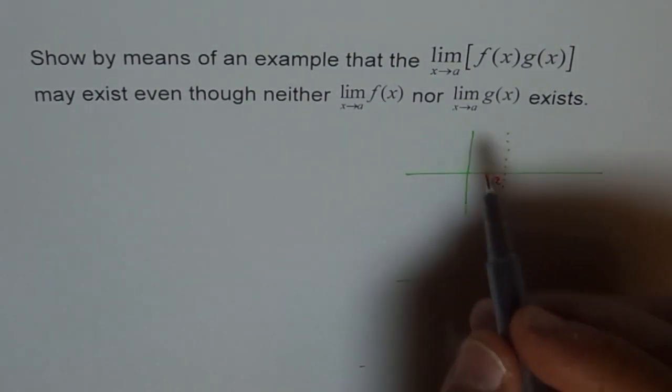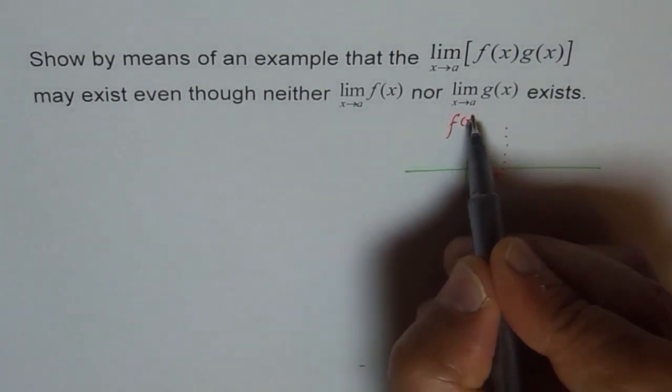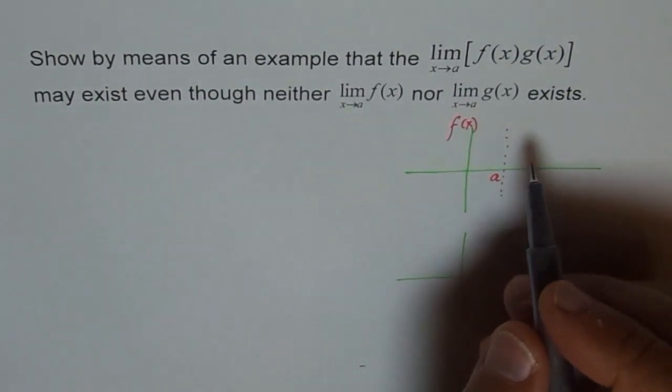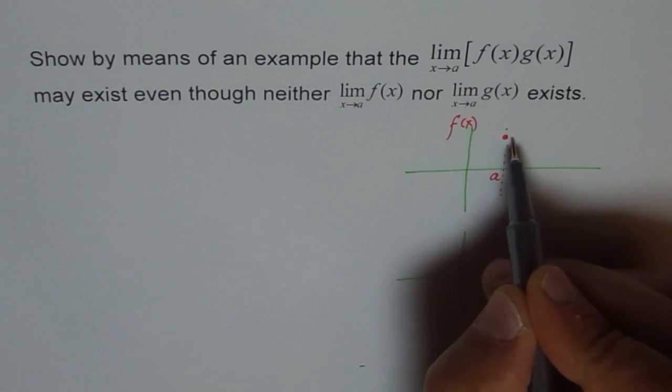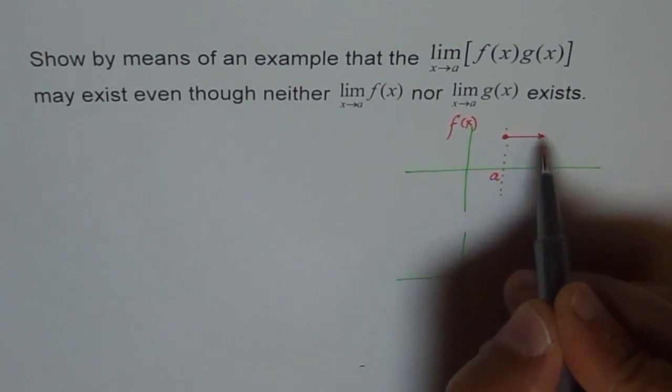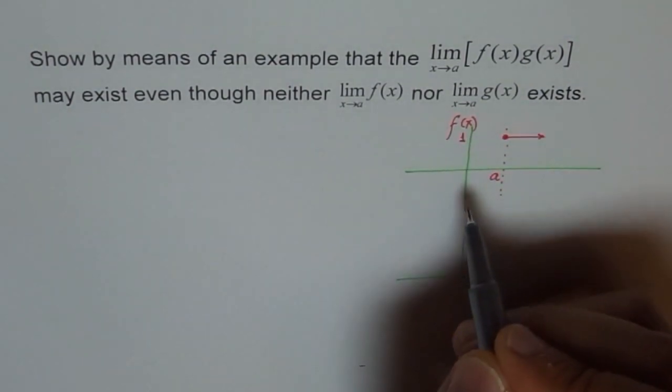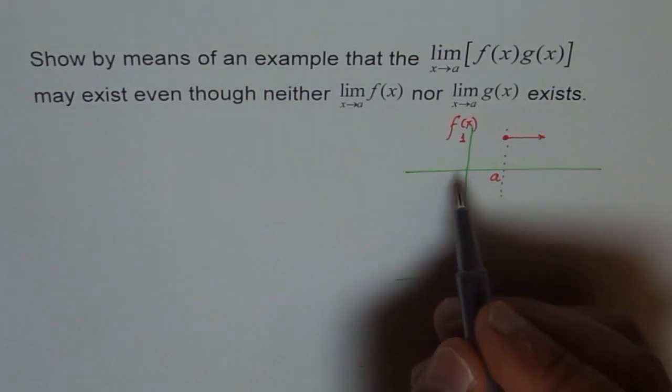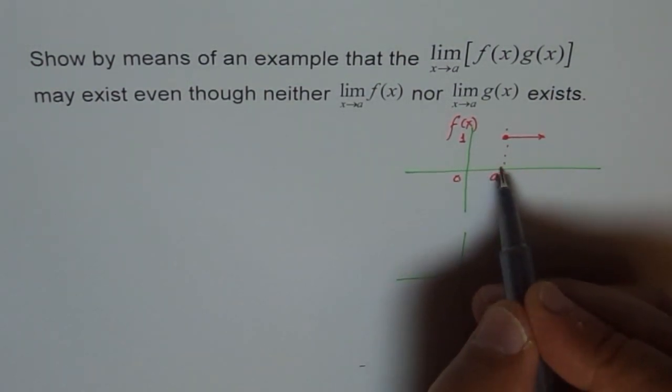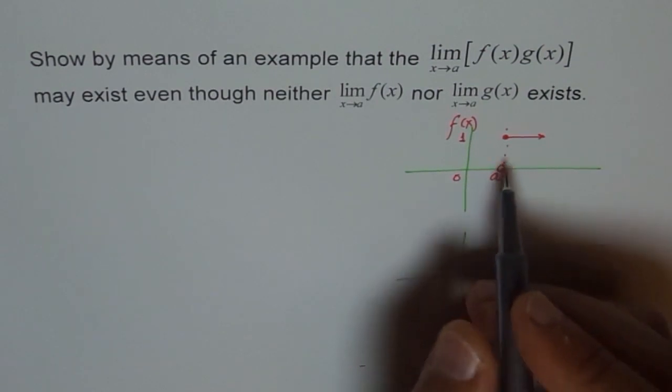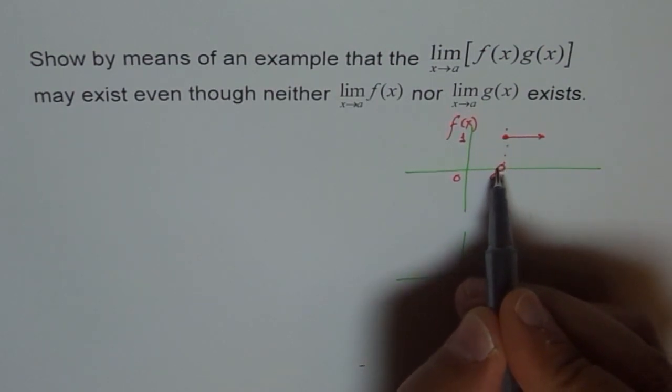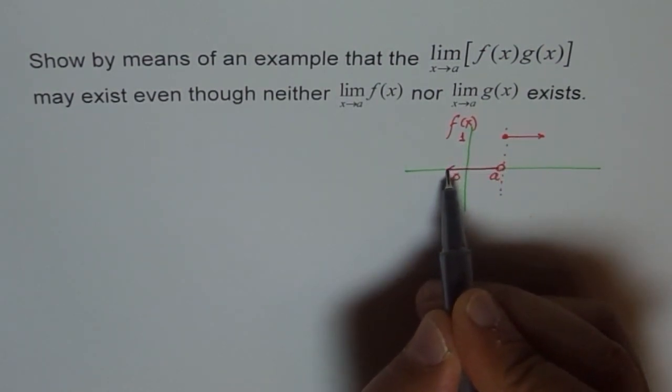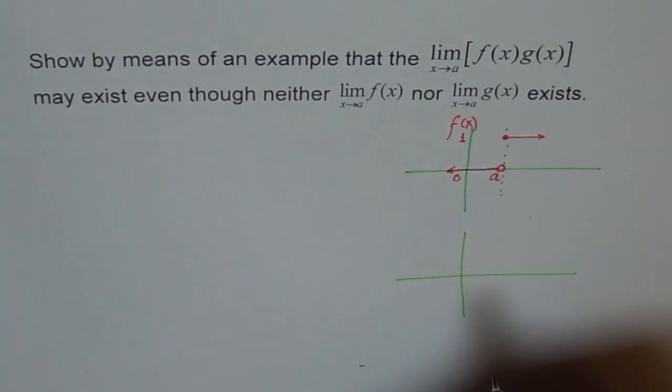Let us first design our function f(x). We can give a value here and say it goes like this. Let's say this value is one, and this is zero. At this point a, we have a hole here because that's the function. This is how I define f(x).